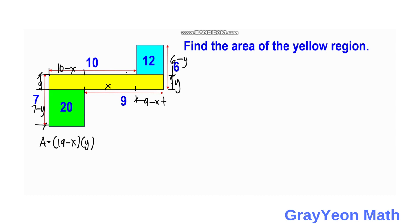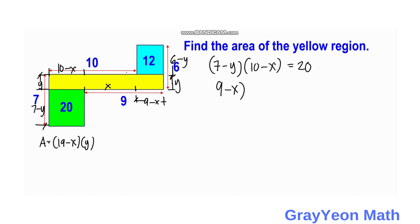Next, we focus on the green rectangle. For the green rectangle, we make an equation: (7 minus y) times (10 minus x) is equal to 20. And for the blue rectangle, we have (9 minus x) times (6 minus y) is equal to 12.